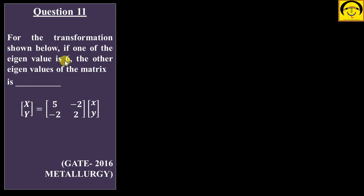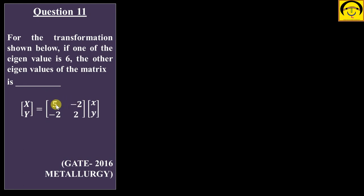Hello students, welcome back. We were solving questions from previous year GATE examinations related to linear algebra, matrix statements, eigenvalues, and eigenvectors. In continuation, this is question number 11. For the transformation shown below, if one of the eigenvalues is 6, the other eigenvalue of the matrix is what? You have this system of equations, with one eigenvalue given as 6.